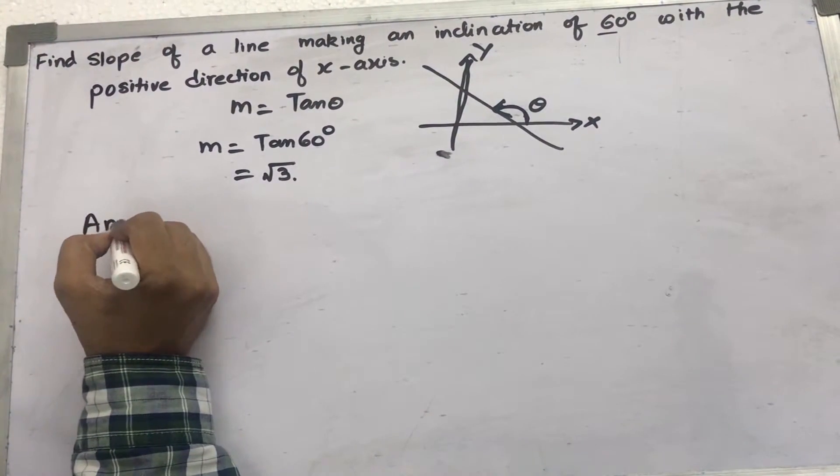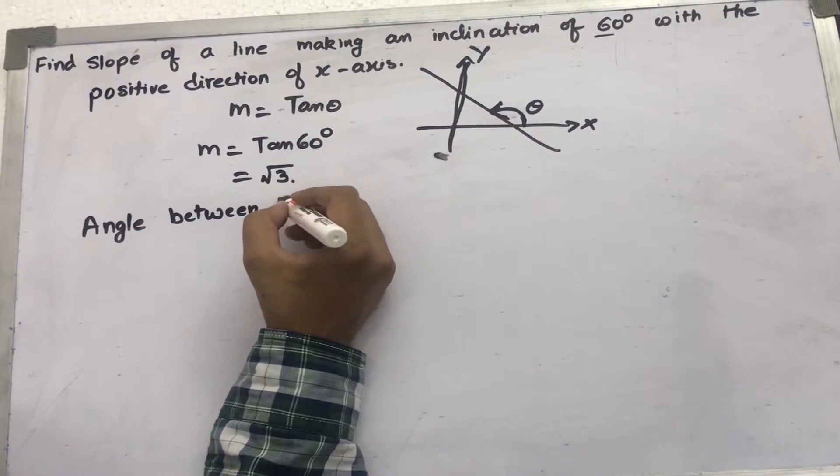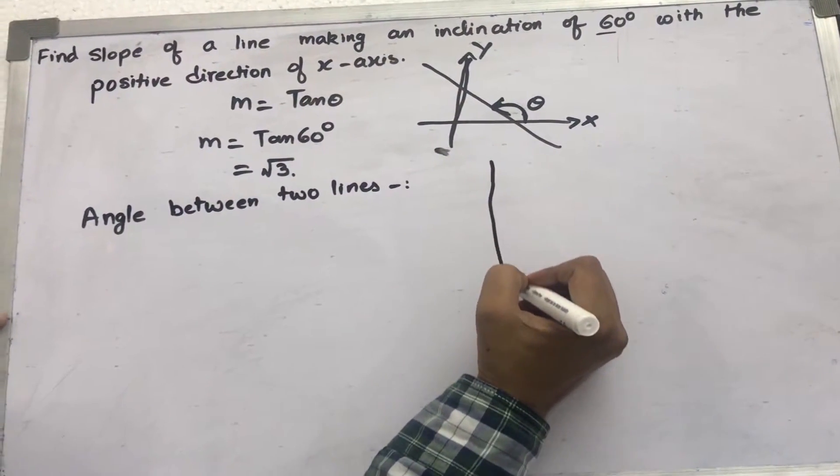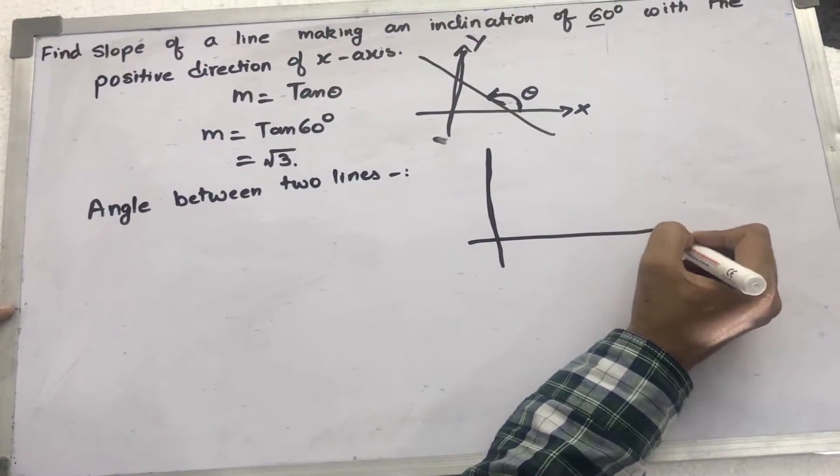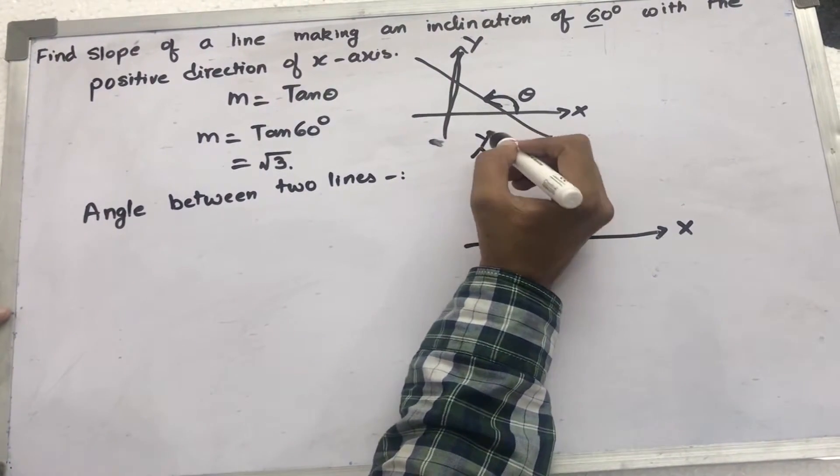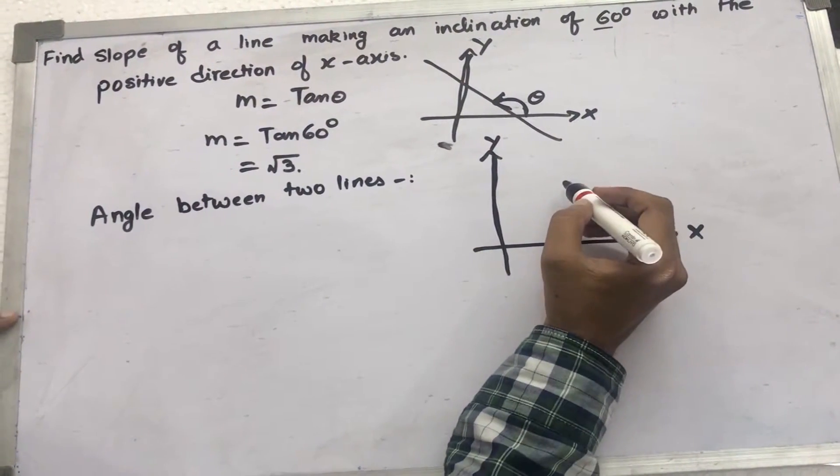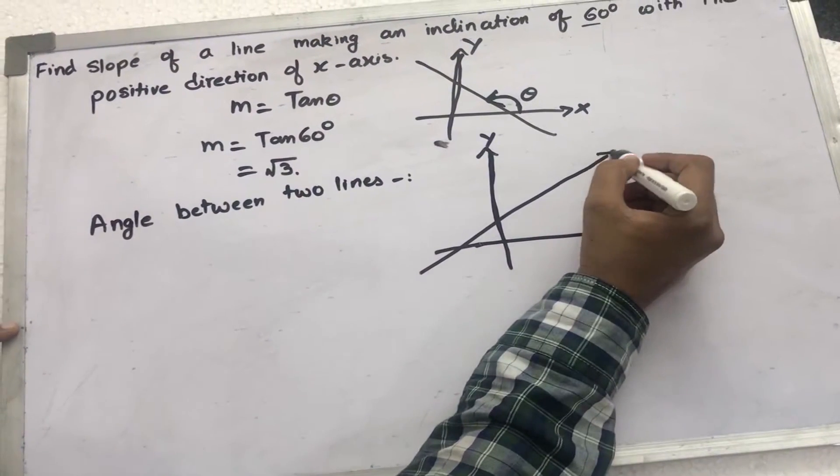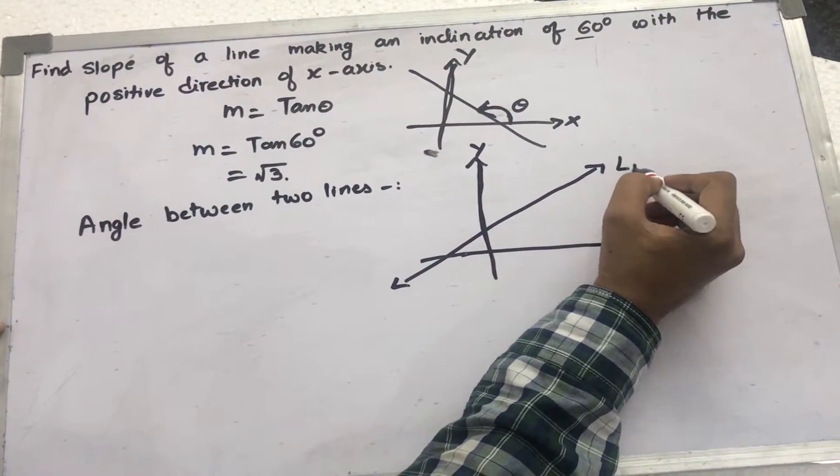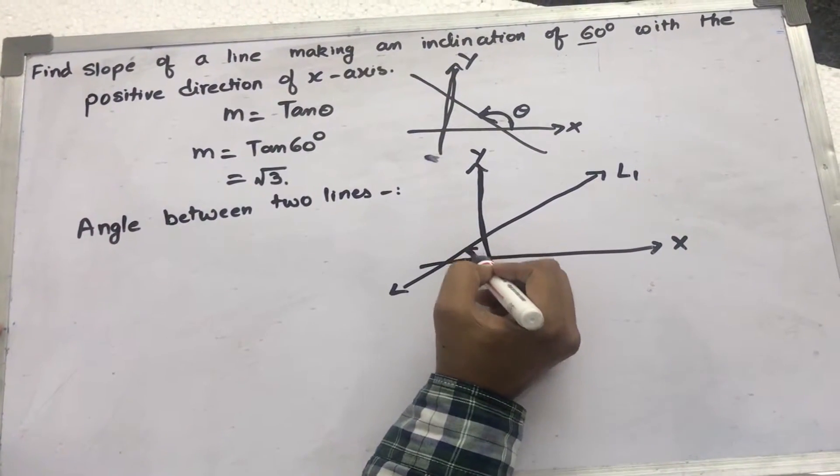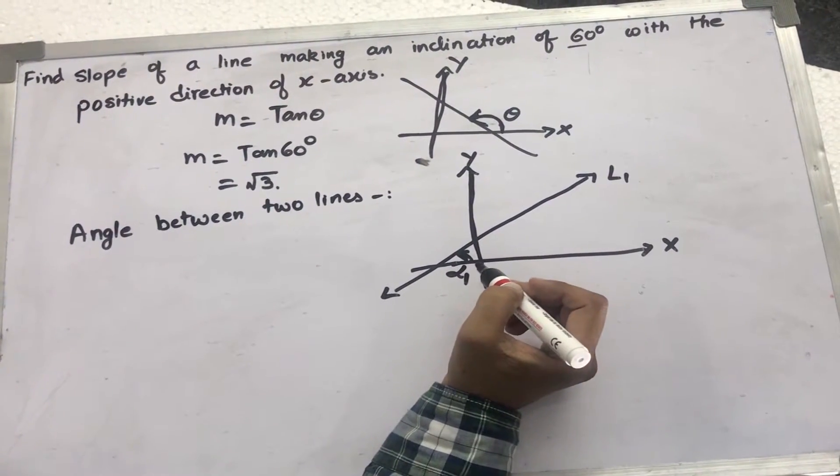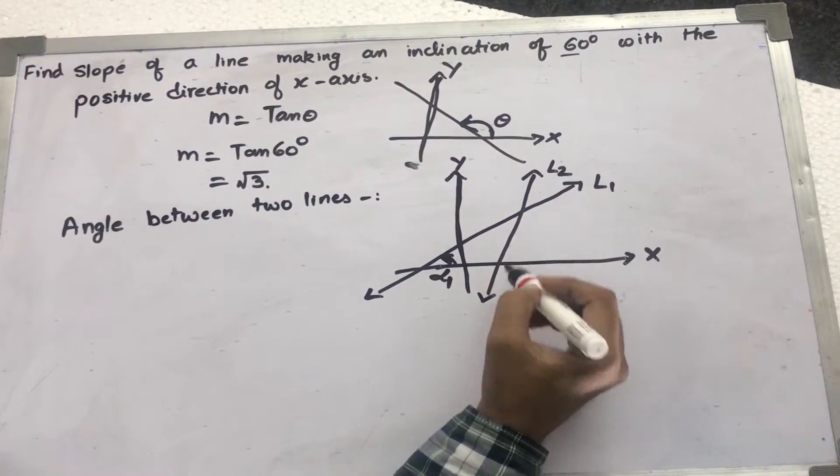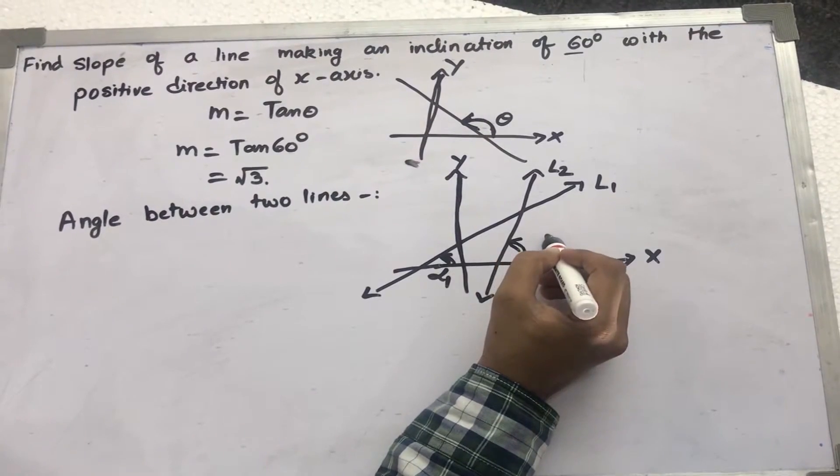Next, we will deal with the angle between two lines. This is x, this is y. Now, consider a line L1 which makes an angle alpha 1 and a line L2 which makes an angle alpha 2.